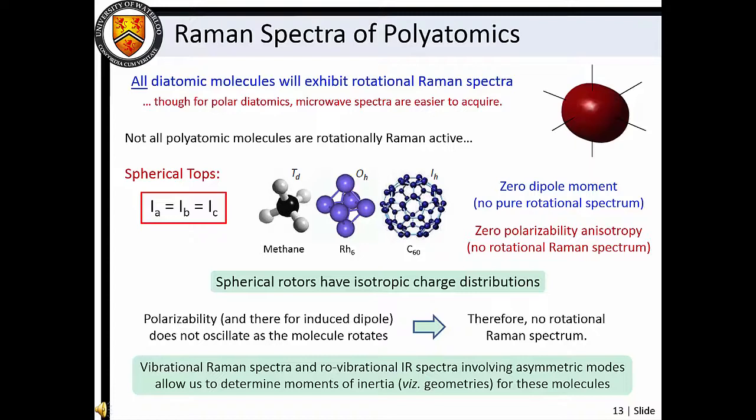Fortunately, we are able to determine rotational energy level structures and therefore geometries for these species by other means, such as IR spectroscopy, vibrational Raman spectroscopy, and electronic spectroscopy. We will explore electronic spectroscopy in masterclass 11. See you next time.